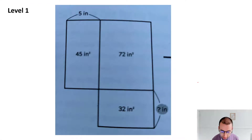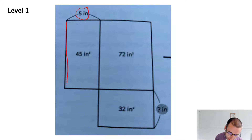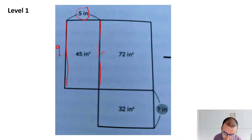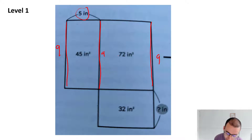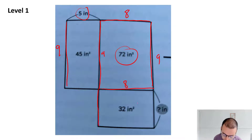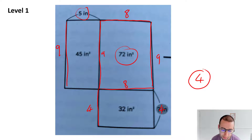This is level one — the first ones. We have an area of 45 and this length up here is five, which means that this length needs to be nine, because five times nine is 45. Similarly, this length is nine, and this length is nine. Now if the area of this big shape is 72, this guy has to be eight, because eight times nine is 72. And if the area is 32, this length is four, because four times eight is 32. So the answer is four. In the book they always use inches. So the answer to this one is four.